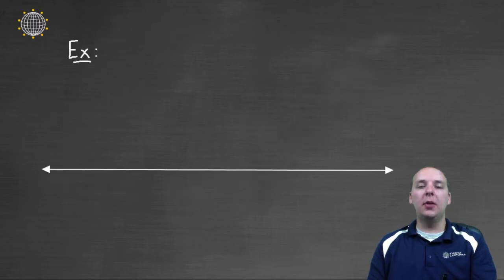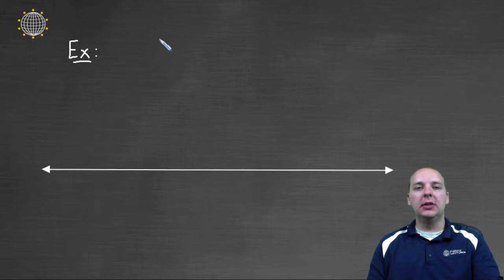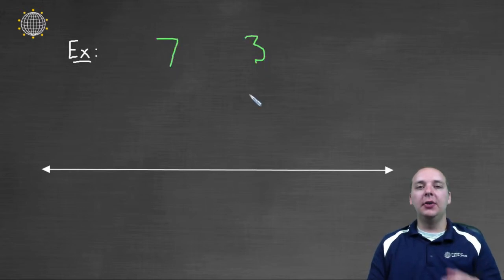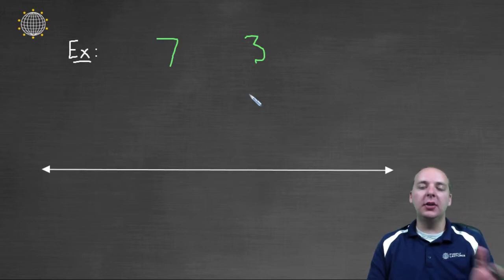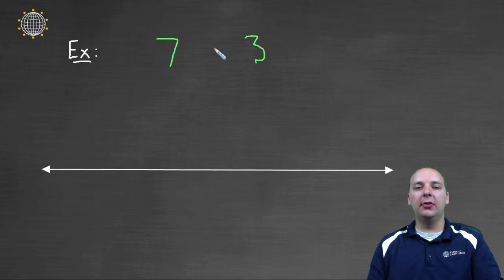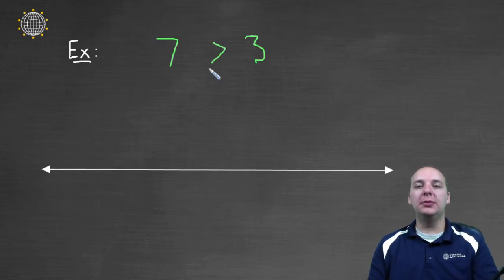Let's try a few examples and run through them. So let's say we had seven blank three. Is seven greater than three or less than three? Well, obviously we're going to start easy — seven is clearly greater than three. But how would you show that? How would you explain that to somebody?